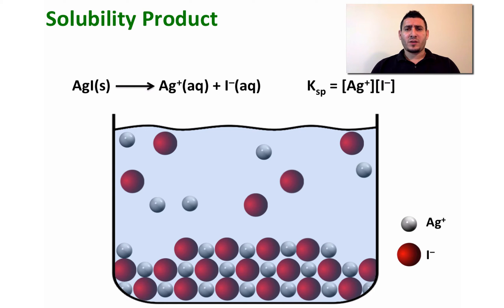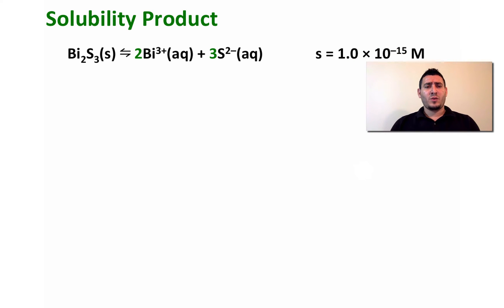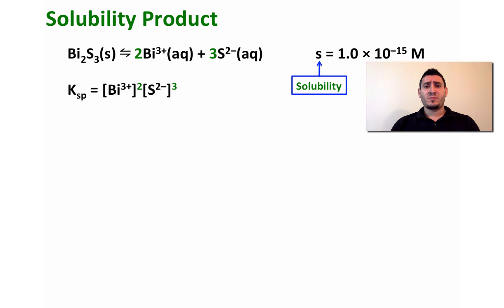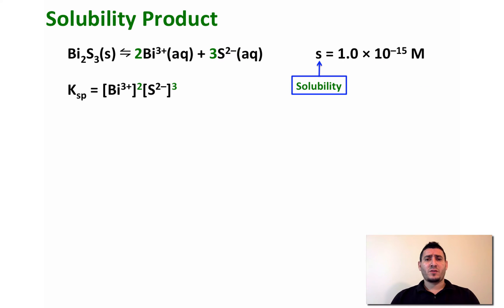How can we calculate the solubility product of the dissolution of an ionic solid? Let's look at bismuth sulfide, Bi₂S₃, which dissolves to give Bi³⁺ plus S²⁻. The solubility of this solid is given as 1.0×10⁻¹⁵ molar. The expression of Ksp is written as the squared concentration of Bi³⁺ multiplied by the cubed concentration of S²⁻.